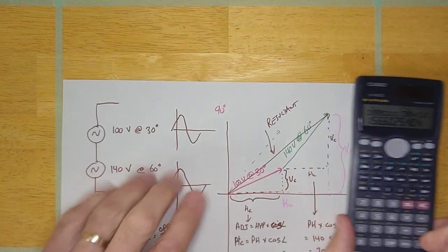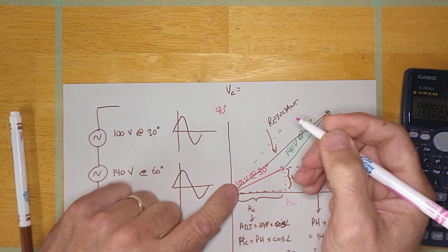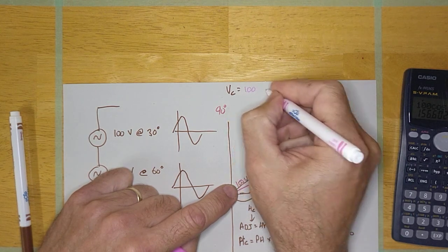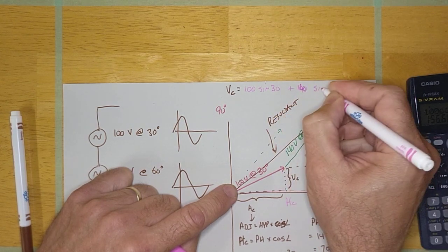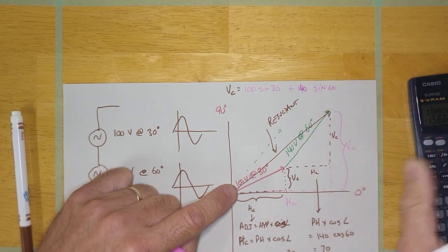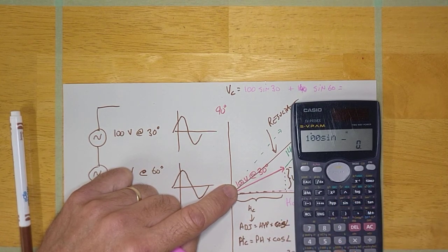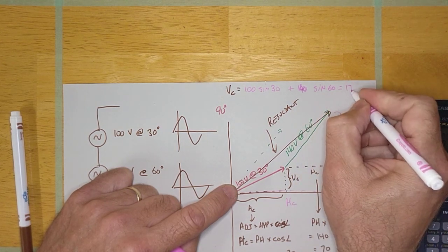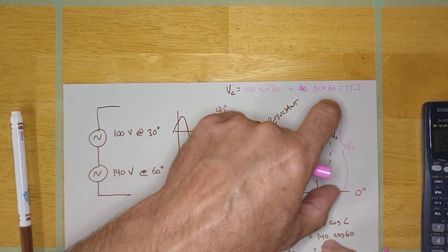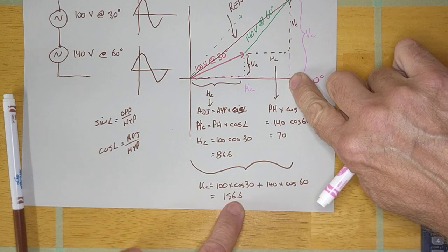Now for the vertical component, it's phasor 1 × sin(angle 1) plus phasor 2 × sin(angle 2): 100 × sin(30°) + 140 × sin(60°). Calculating that gives us 171.2. So the total vertical component is 171.2, and the total horizontal component is 156.6.